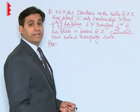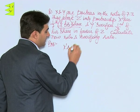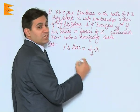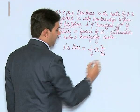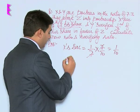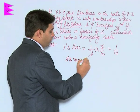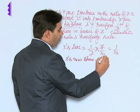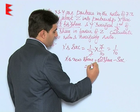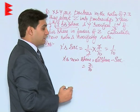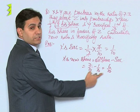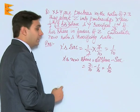Now let us calculate X's sacrifice. X's sacrifice is equal to 1/7th of his share. His share is 7/10, so X is sacrificing 1/7 × 7/10 = 1/10 in favor of Z. X's new share would be equal to old share minus sacrifice: 7/10 − 1/10 = 6/10.